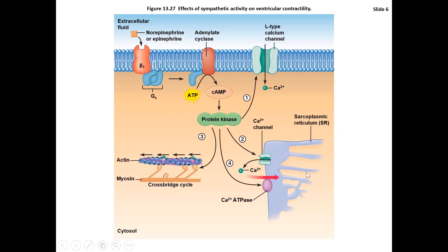Lastly, the calcium ATPase pump pumps calcium back into the SR. All four of these events increase the rate of ventricular contraction — we pump more calcium out to generate more forceful contractions, and also pump calcium back into the SR faster to increase the rate of relaxation between contractions, with faster myosin ATPase activity augmenting that as well. All four events bring about more forceful contractions of the myocardium, which increases stroke volume.